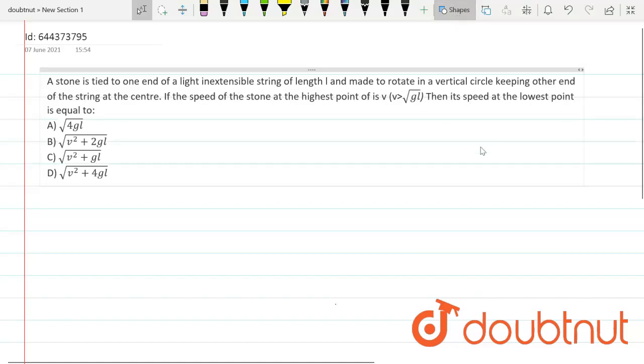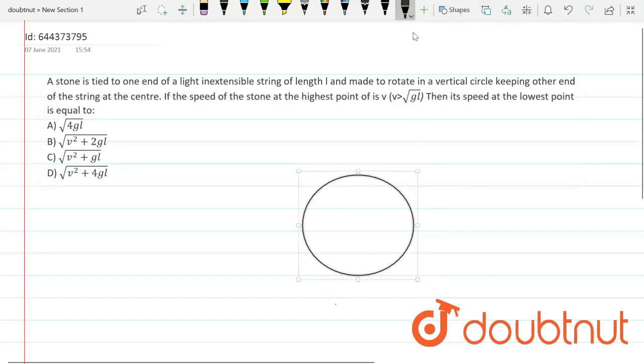Okay, so for that, we'll be drawing a vertical circle first. So suppose this is the vertical circle that we are talking about. In this particular situation, at the highest, at the lowest point, we have to find out the velocity with which it was projected. And this is actually the string which is passing through the center and the other end is fixed at the center.